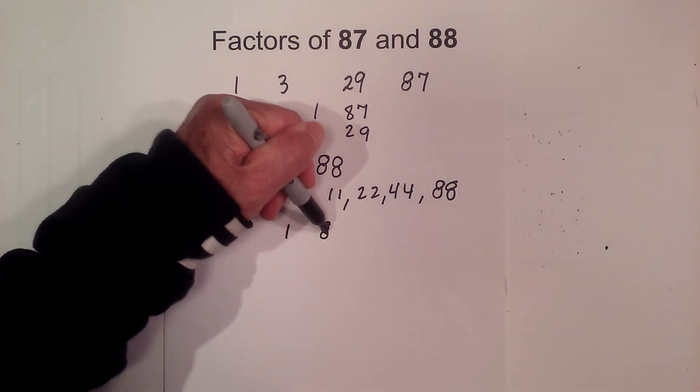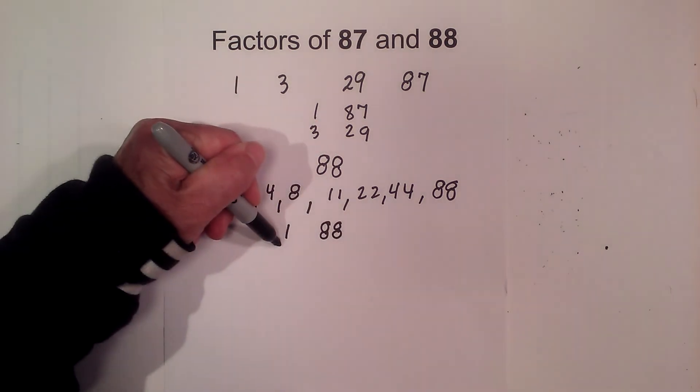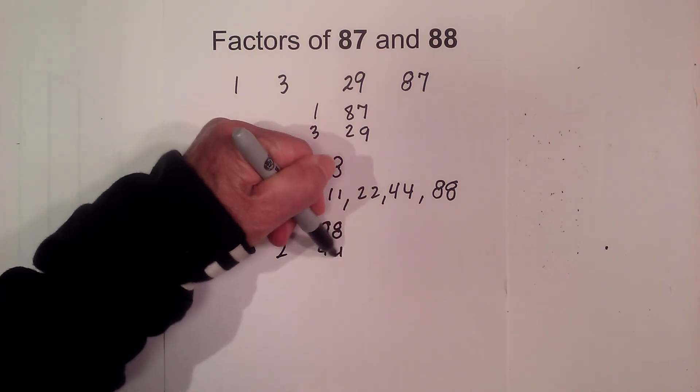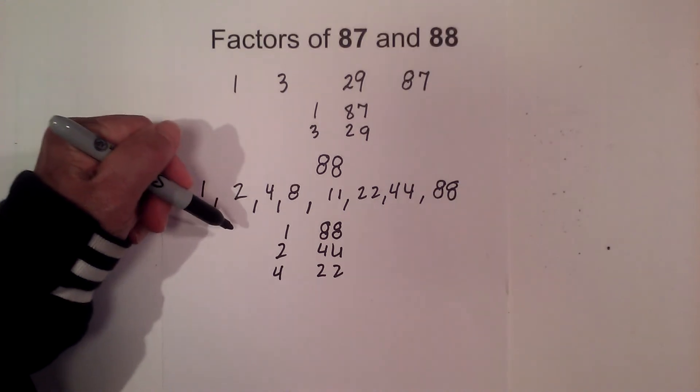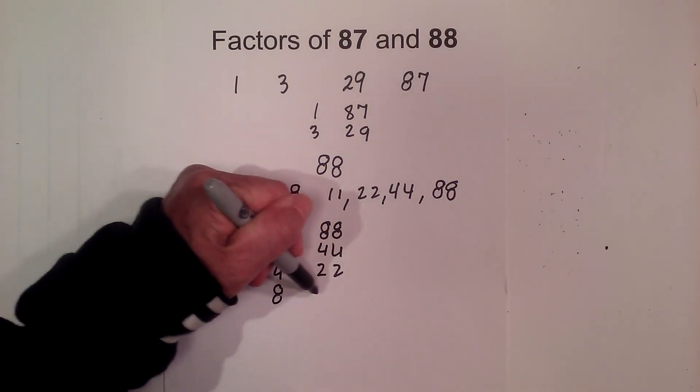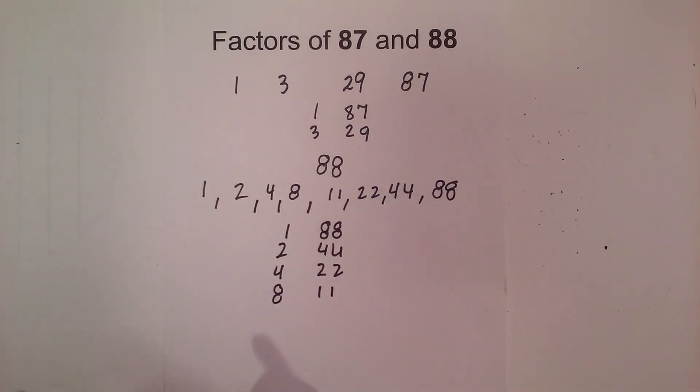So it's 1 times 88, and then we get 2 times 44, and 4 times 22, and then 8 times 11 if you'd like to know the pairs. So there we go, the factors of 87 and 88.